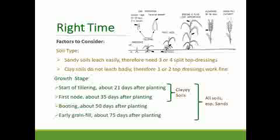Now let's look at the growth stage of the crop. At that 21-day point — the three-leaf stage — the crop is beginning to tiller, the crown roots are growing, and the ear is beginning to form. That's a critical time to apply nitrogen. Then we get to the first node stage around 35 days after planting, when the stem is beginning to elongate — this is the second important stage for applying nitrogen fertilizer. At a minimum, I would suggest you split your top dressing into these two phases: the first half at tillering and the second half at first node.